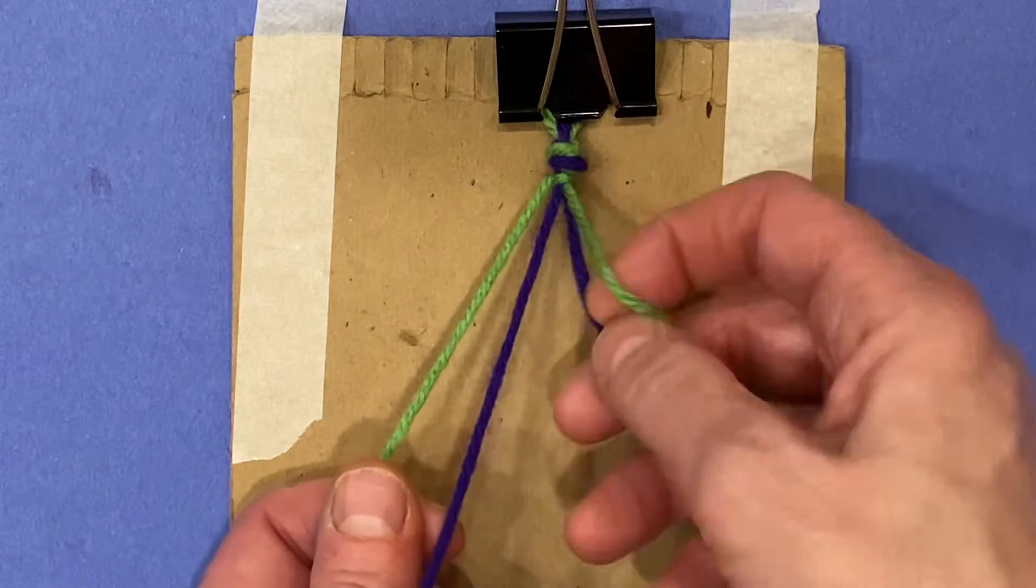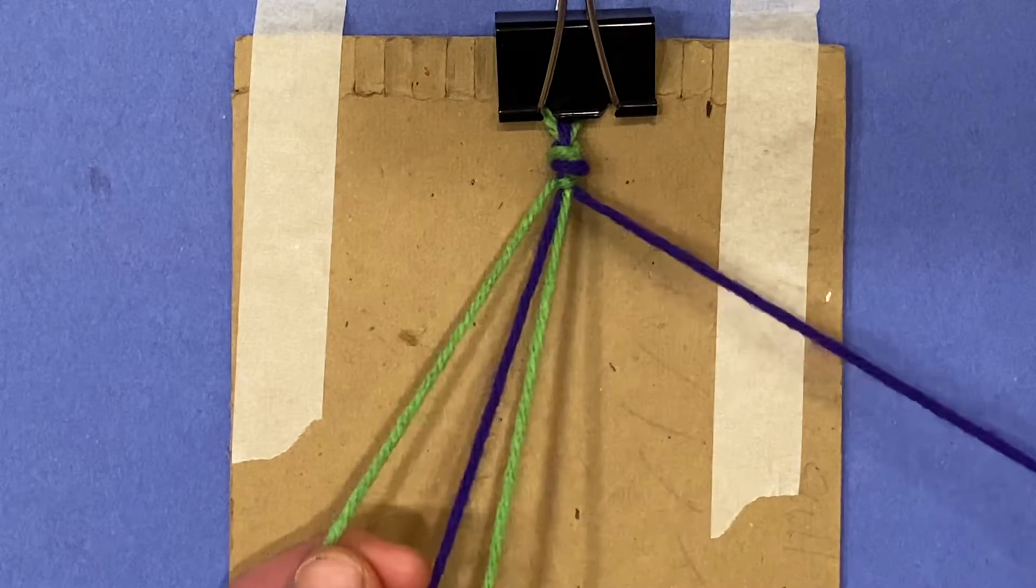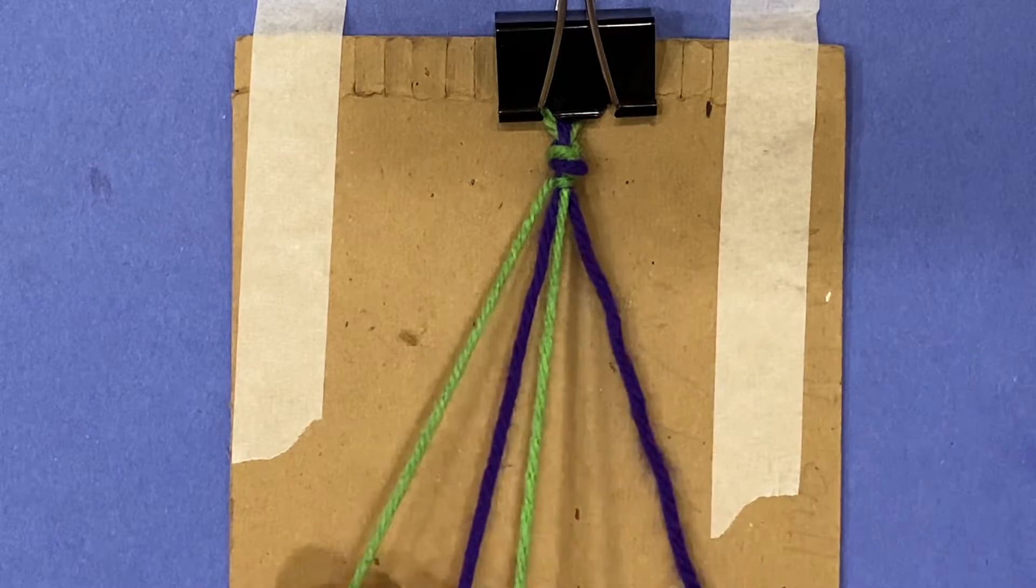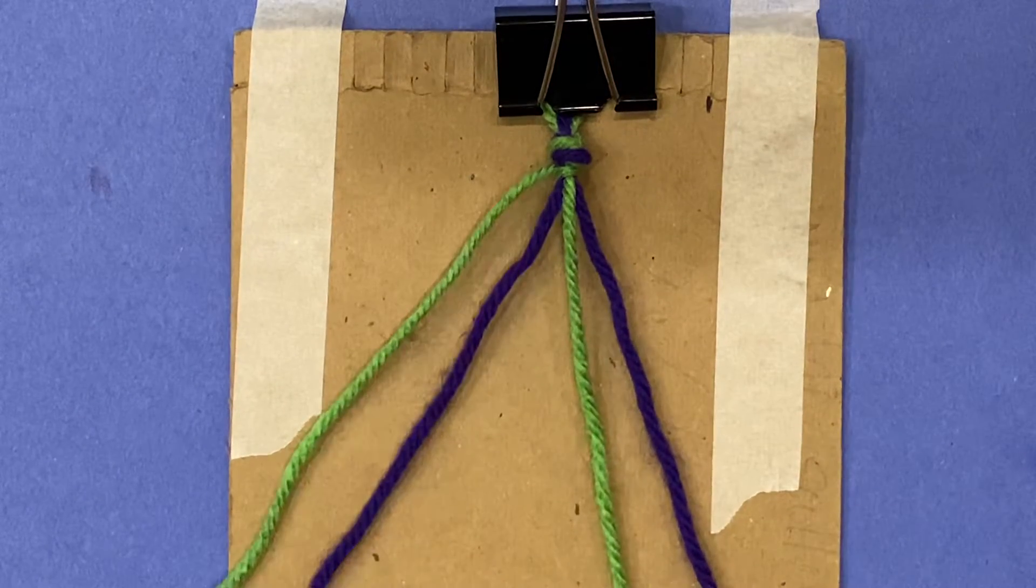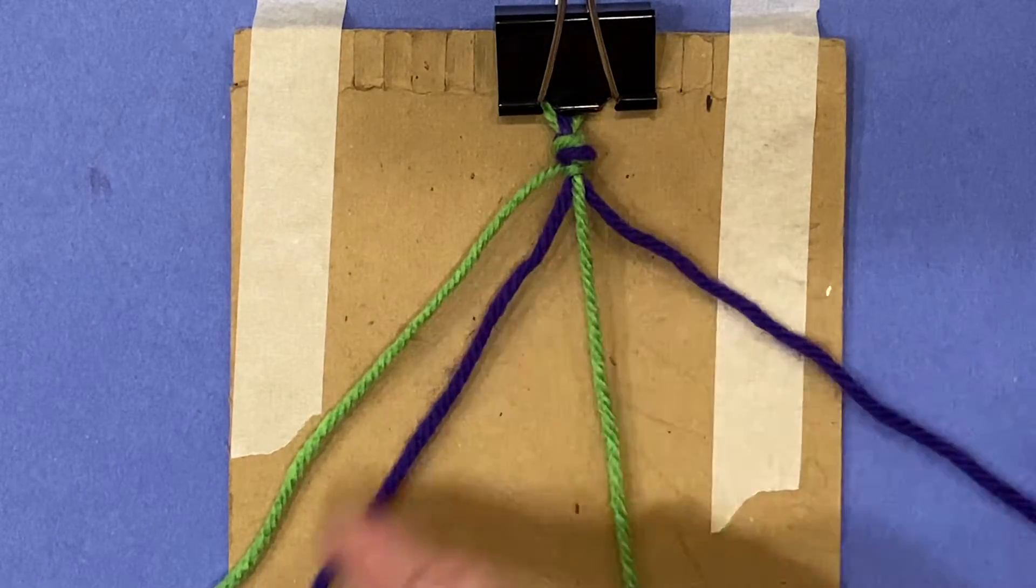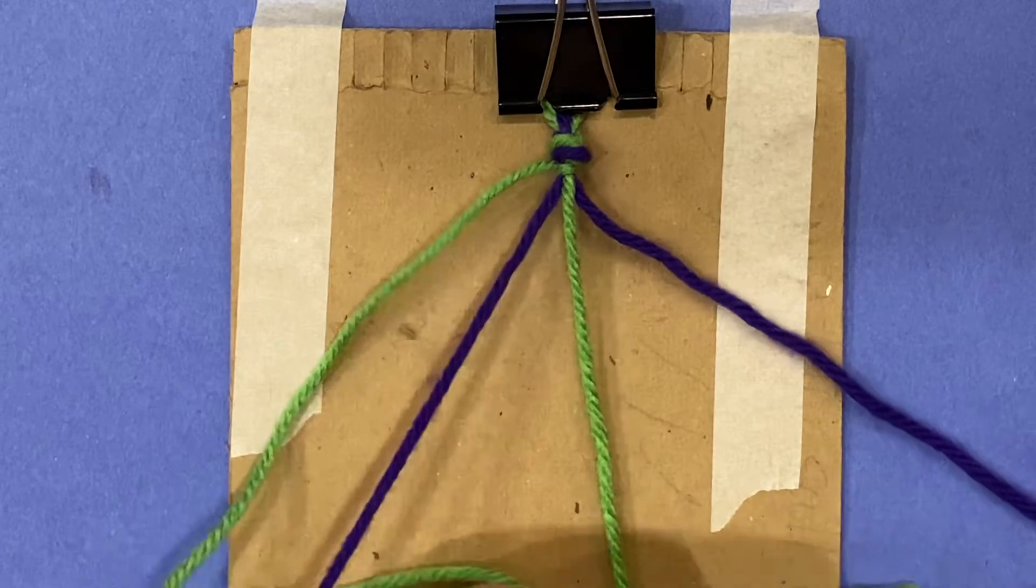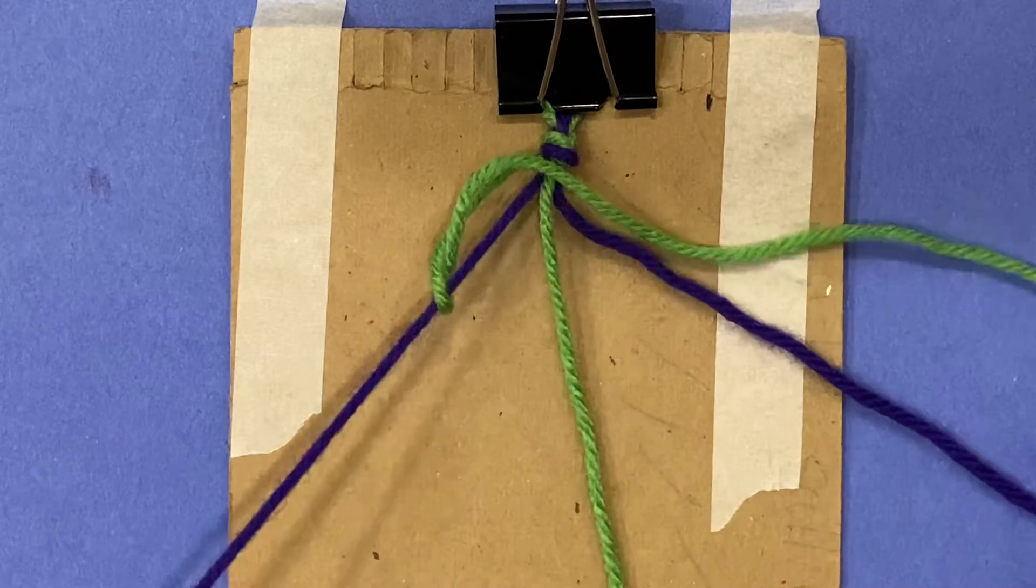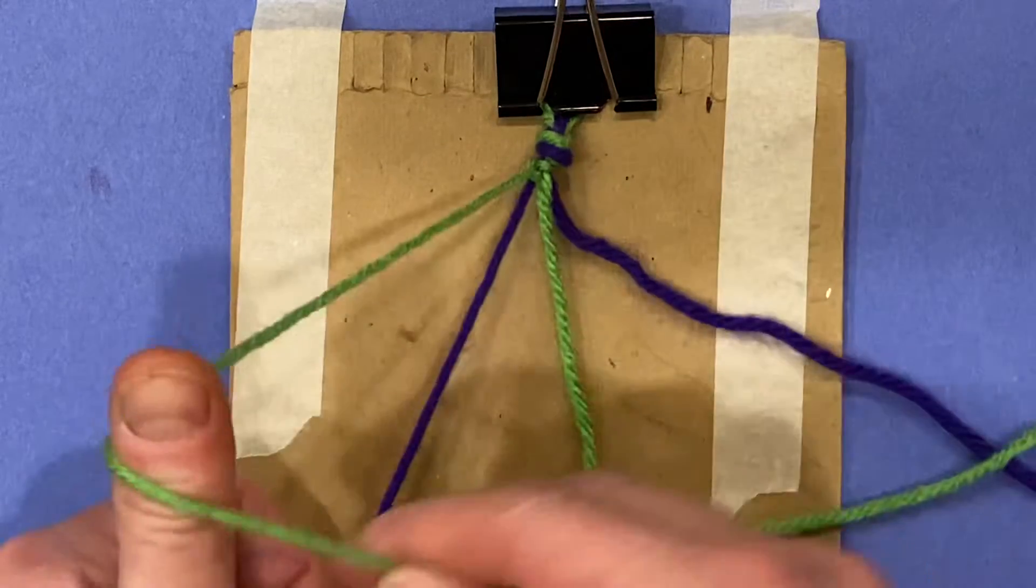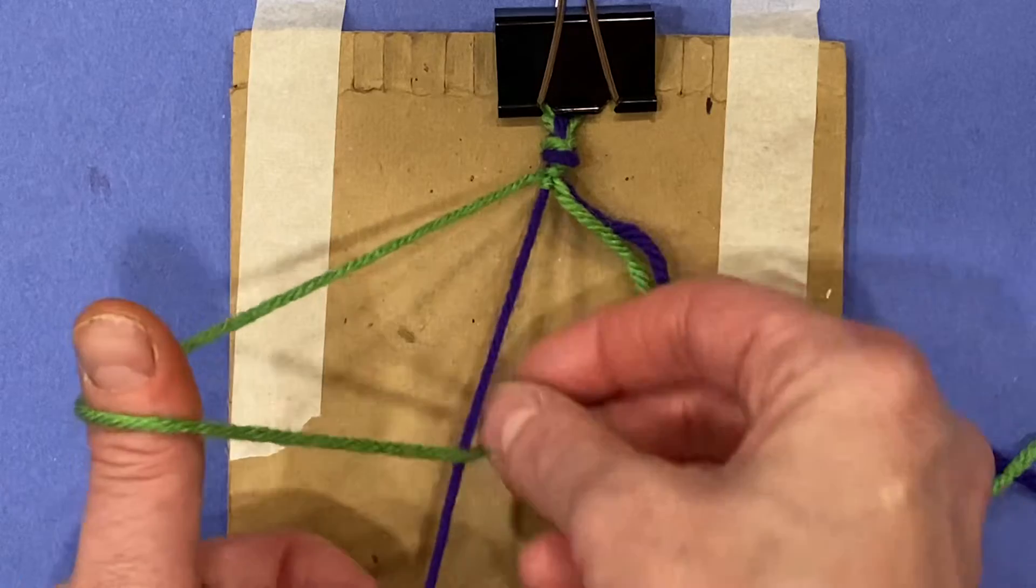And I'm going to keep it in the order I want it to go and I want it to go green, purple, green, purple. So I'm going to hold these all like a little bit apart and I'm going to take the first one and on the purple string, I'm going to do that four stitch or this little triangle stitch.